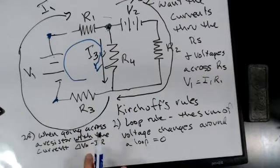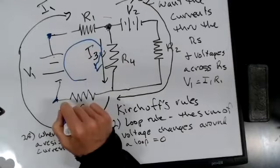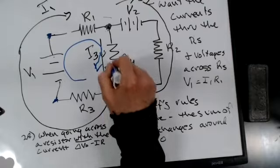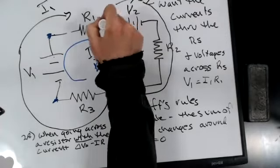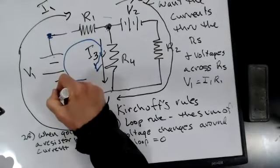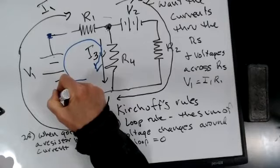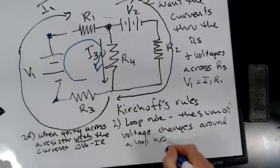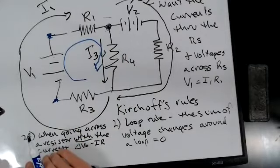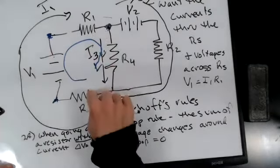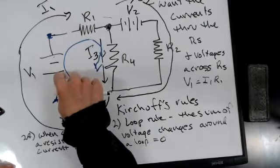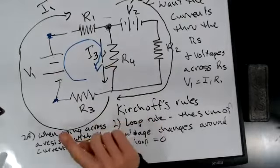So going around this loop I have a positive increase across the battery and minus I1R1, minus I3R4, minus I1R3. In every one of these cases I'm going around a resistor in the direction of the current. If I go the other way I get plus I1R3, plus I3R4, plus I1R1, and then minus V1 equals zero. In both cases the equations are equivalent — multiply one by minus one and you get the other.